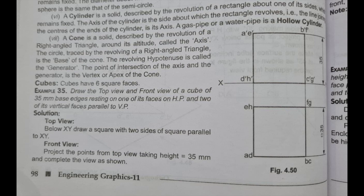We are going to start with solids, doing sums from the book only. First sum: draw the top view and front view of a cube of 35mm base edges resting on its faces on HP, and two of its vertical faces are parallel to VP. Now I will draw HP and VP first.